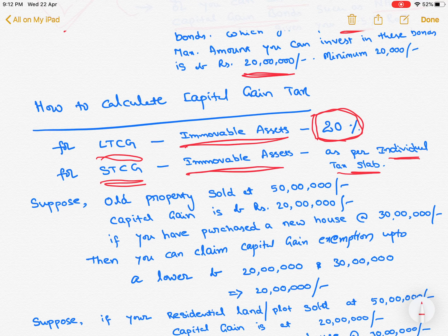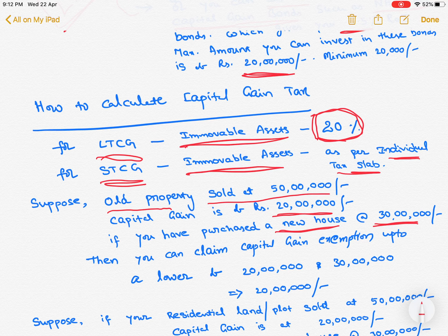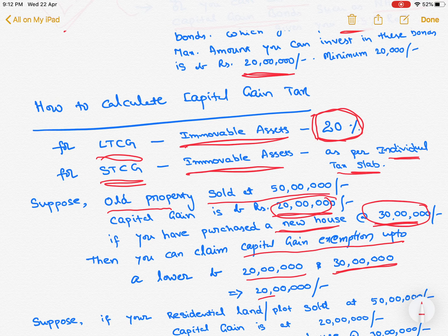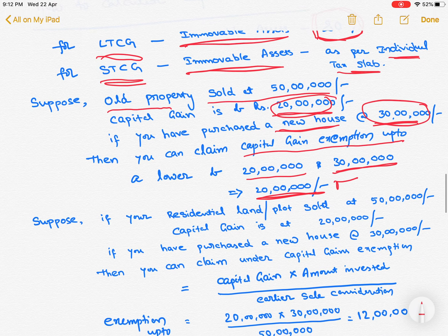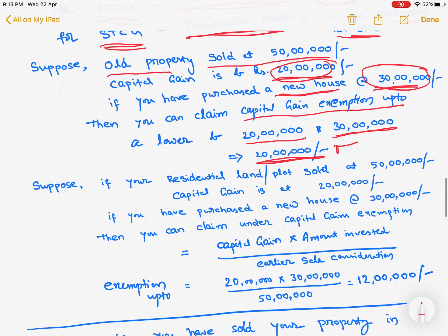Now we will see with an example. Suppose your old property is sold at 50 lakhs and the capital gain after indexation is 20 lakhs. If you have purchased a new house at 30 lakhs, then you can claim capital gain exemption up to the lower of 20 lakhs and 30 lakhs — which is 20 lakhs. So 20 lakhs is the maximum capital gain exemption in this scenario.